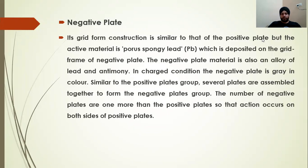Similar to the positive plate group, several negative plates are assembled together to form the negative plate group. The number of negative plates is always one more than the positive plates so that electrochemical action occurs on both sides of each positive plate. The porous spongy lead means the material has small holes, like a sponge. The color is dark grey when fully charged.